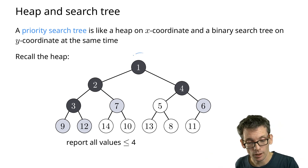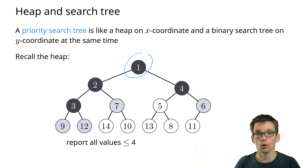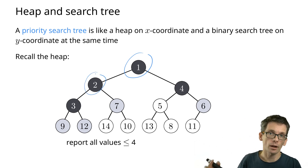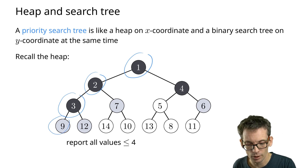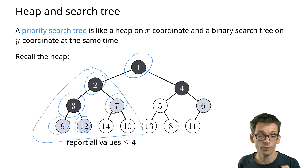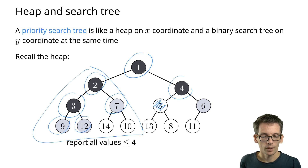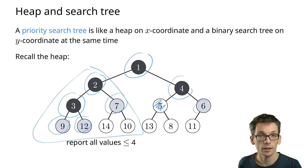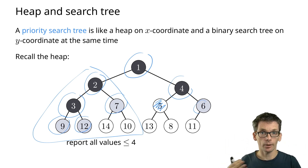I simply start at the root; if it is smaller or equal to four I report it and recursively go to the subtrees. I see the two, report it, go to subtrees. I see the three, report it. Here's a nine — I can stop. Twelve is larger than four — stop. Seven is larger than four — stop. Going to the right tree, the four is smaller or equal to four so I go there. For a 1D one-sided query I can use a heap.